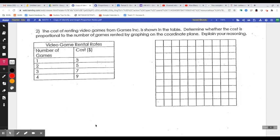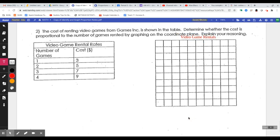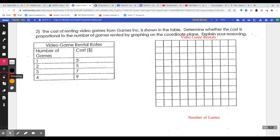Okay. One more. Number two. The cost of renting video games from Games Incorporated is shown in the table. Determine whether the cost is proportional to the number of games rented by graphing on the coordinate plane. Explain your reasoning. Okay. So let's, maybe I'll use some text bugs here. So video game rentals. And we have number of games. Number of games. And the cost. I'm going to have to draw this one. So this is cost in dollars.